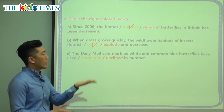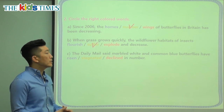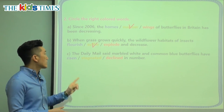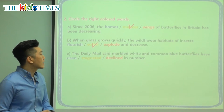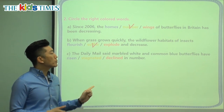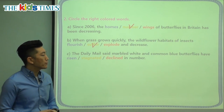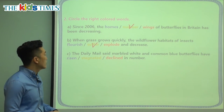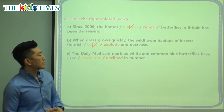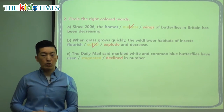So when the grass grows too quickly, the places where the insects live, they suffer. And the last question: the Daily Mail said marbled white and common blue butterflies have risen, stagnated, or declined in number.